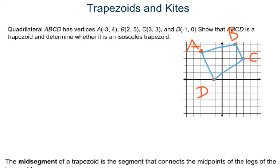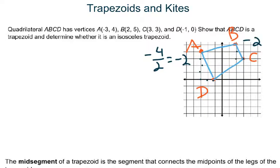The question is whether AD and BC are parallel. To check, find their slopes using rise over run. From A to D: down 4, over 2, giving a slope of −2. From B to C: down 2, over 1, also giving a slope of −2. They have the same slope, so they are parallel, proving that ABCD is a trapezoid.